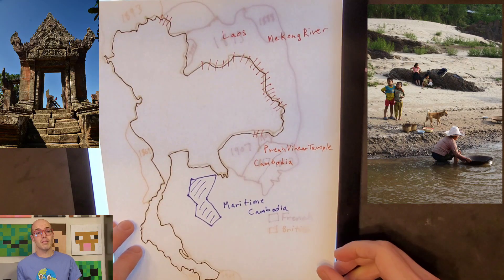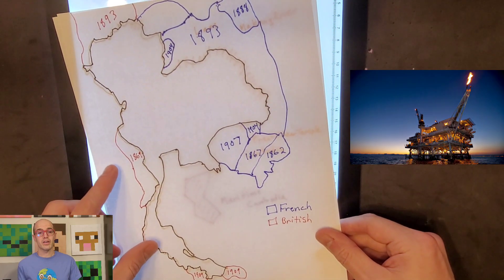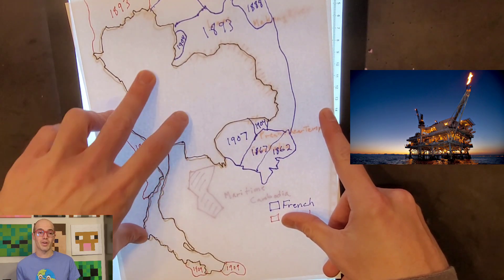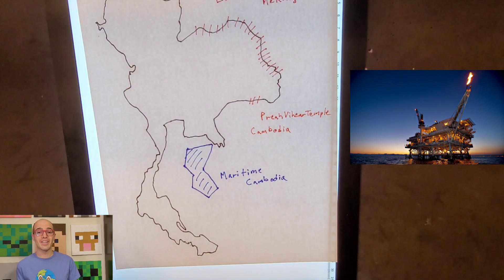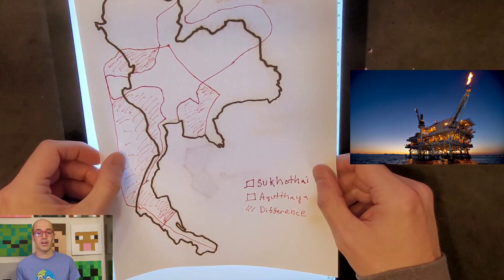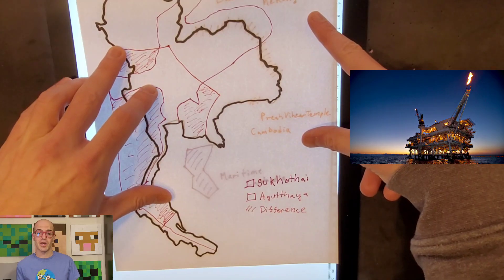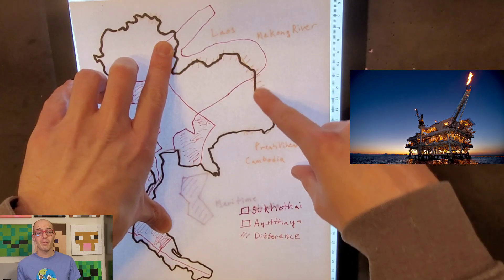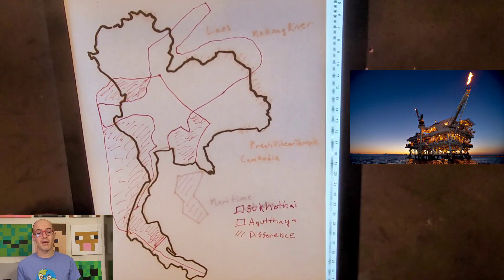Today, Thailand's major territorial disputes surround its maritime borders with Cambodia. Different continental shelf claims have created an overlapping area of 26,000 square kilometers in the Gulf of Thailand. This area is hypothesized to contain a potential 11 trillion cubic feet of natural gas, as well as 500 million barrels of condensate and oil. This area was claimed in 1972 by Cambodia and counterclaimed in 1973 by Thailand. As of 2024, both countries are working on a diplomatic solution to jointly develop these resources for the mutual benefit of both countries.